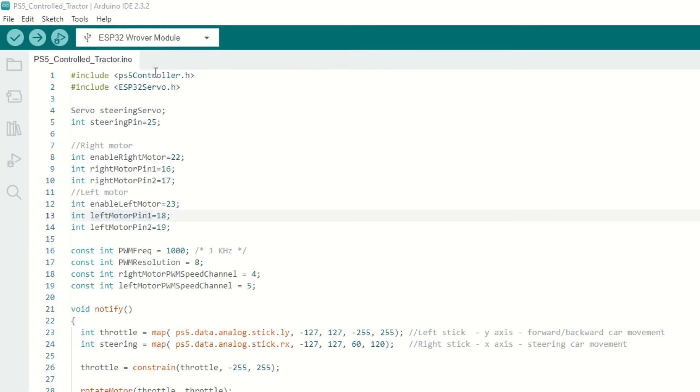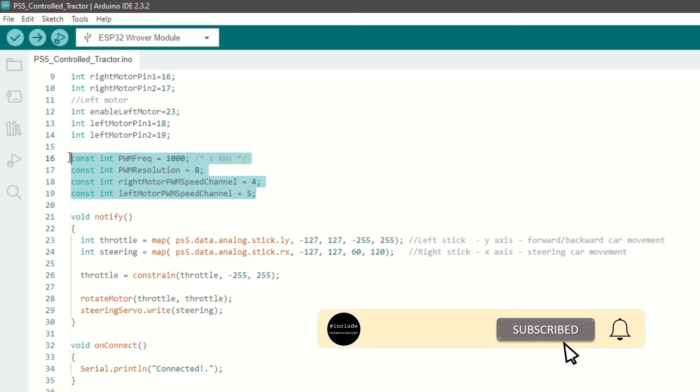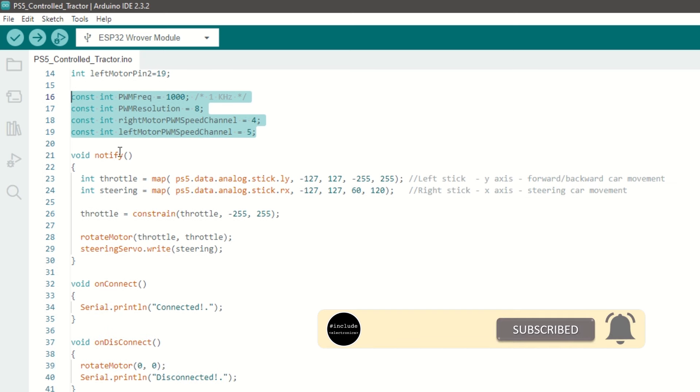Inside code we need to include the PS5 controller library. Then we need to include ESP32 servo library as well. We have created objects for servo. We have assigned the right and left motor pins. We have set the PWM frequency, resolution and channel for speed.